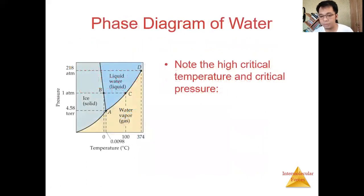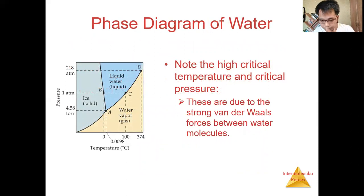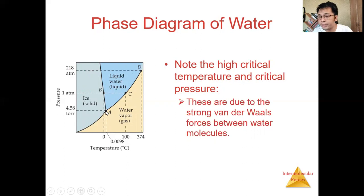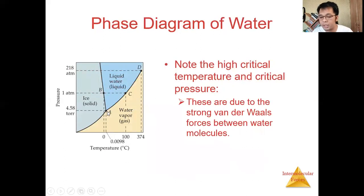Now let's look at the phase diagram of water. Point A is the triple point. The triple point is the existence of three states of matter — solid, liquid, and gas — at the same temperature and pressure simultaneously. For water, the triple point is at 4.58 Torricelli and 0.0098°C, where water exists as solid, liquid, and gas at the same time.